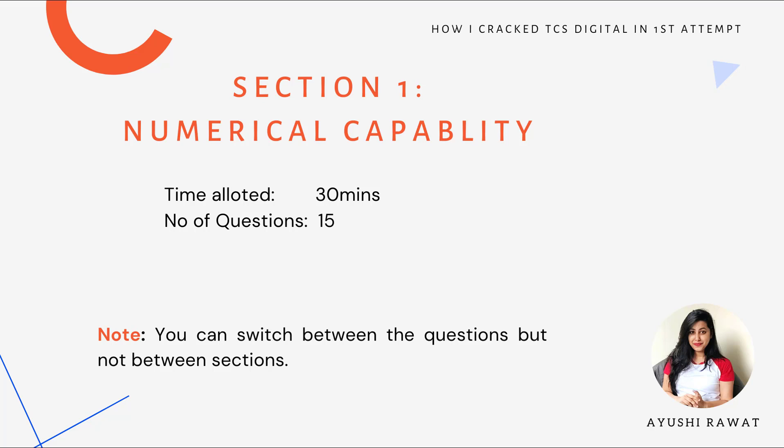The numerical section covers topics such as time and work, ratio, percentage, simple and compound interest, profit and loss, speed distance time, statistics, etc. You will have to be a little quick in this section, otherwise you will run out of time. This section is the toughest amongst all. Please try to attempt all the questions as there is no negative marking. Scoring good in aptitude will increase your chances of getting shortlisted. Also note that you can switch between questions but not sections — you will not be able to switch between given sections.